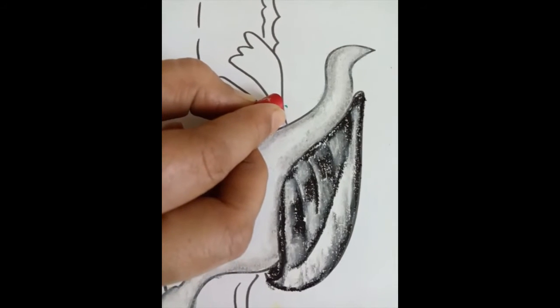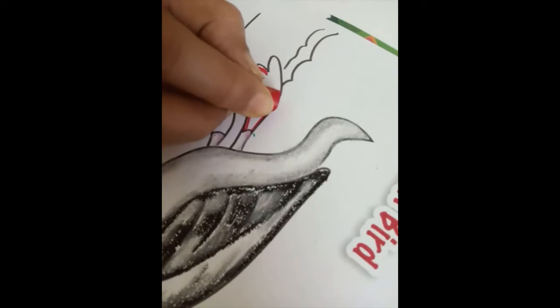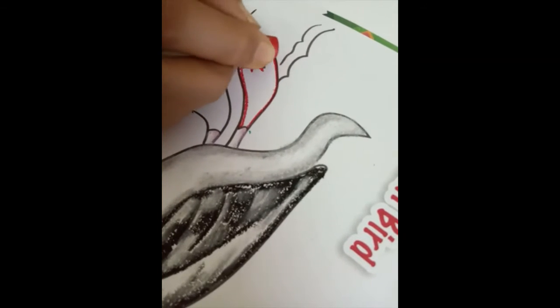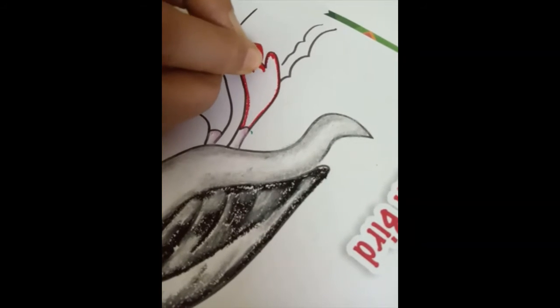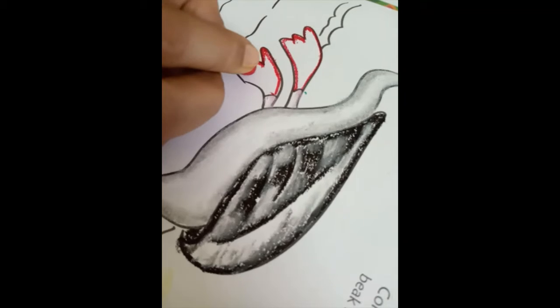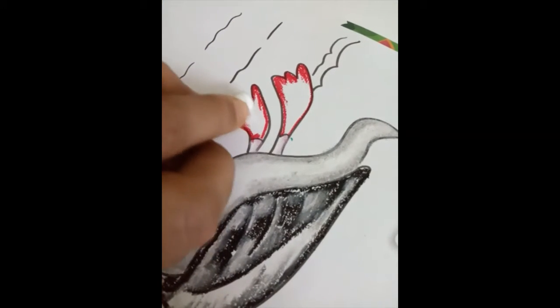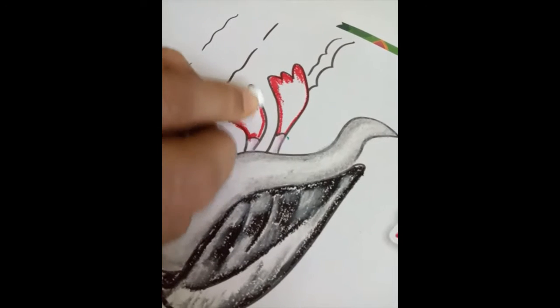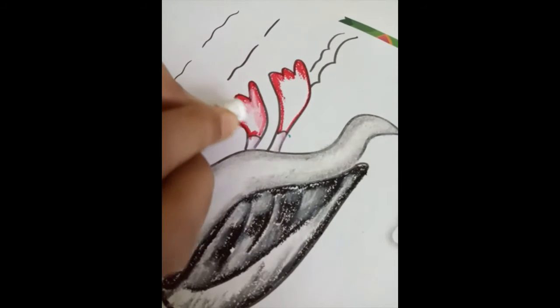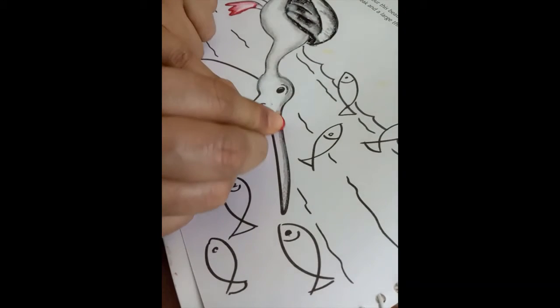To color the feet we will use red color. Only the outlines, and then white. And in the same way we will color the beak.